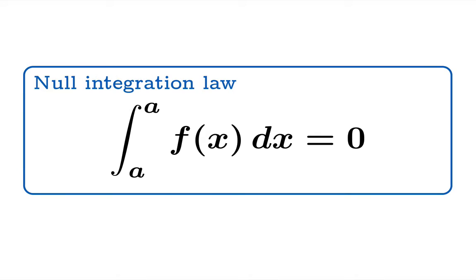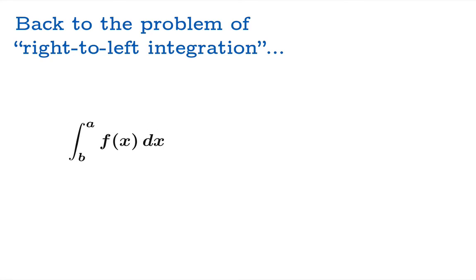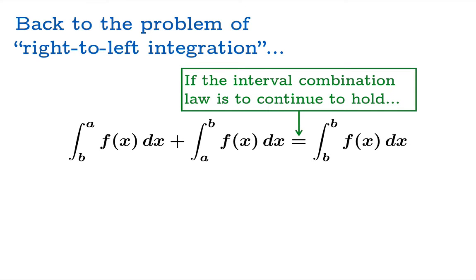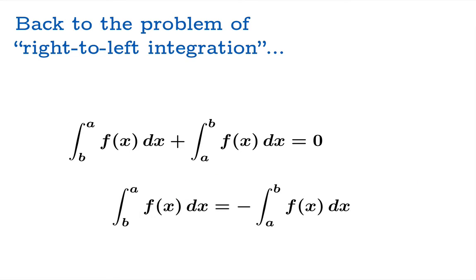Let's call this definition the null integration law. Now let's go back to the problem of right-to-left integration. Suppose we have the definite integral from B to A and we add the definite integral from A to B. If the interval combination law is to hold in this case, then the net result should be the integral from B to B. But the null integration law tells us that this right-hand side must equal zero. So we realize that the integral from B to A has to equal the opposite of the integral from A to B.